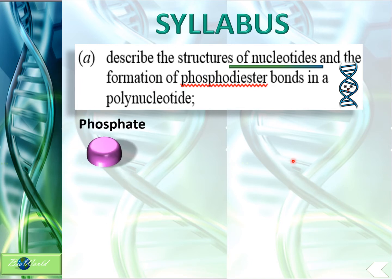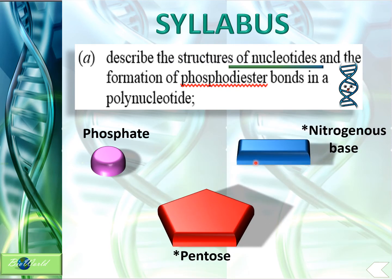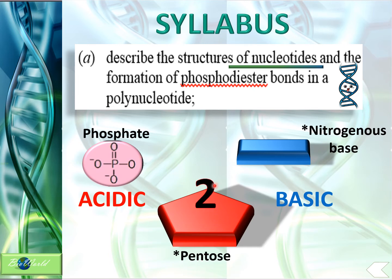Nucleotides have three parts: the phosphate, the pentose, and the nitrogenous base. The phosphate end makes the nucleotide acidic, whereas the nitrogenous base end makes the nucleotide basic. All nucleotides have the same phosphate, that is PO4, but there are two different types of pentose and five different types of nitrogenous base.